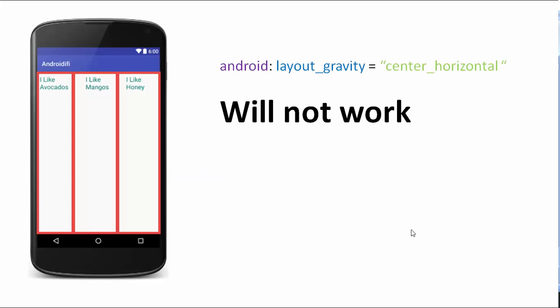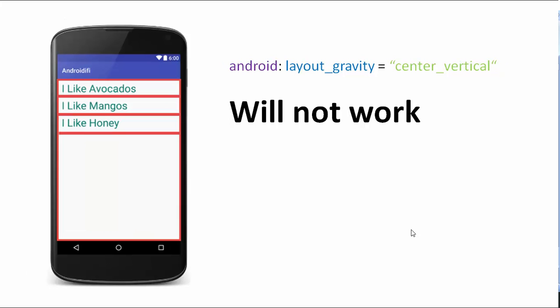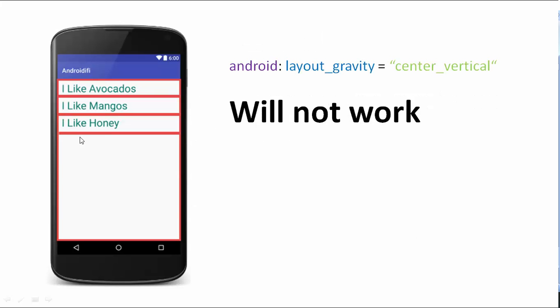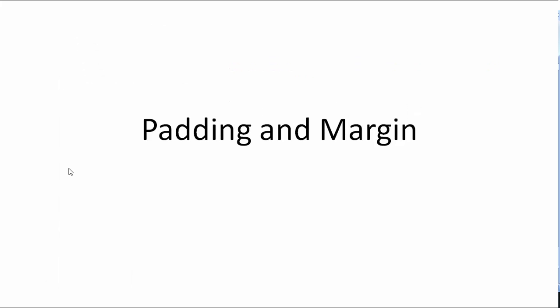If the orientation of the linear layout is set to horizontal, then layout_gravity center_horizontal will not work. If the orientation is set to vertical, then layout_gravity center_vertical will not work. Because linear layout can only place its views below each other or next to each other, it cannot overlap views on top of each other. So if you assign layout_gravity center_vertical to the 'I like avocados' text, that text view cannot skip the two rows above it.